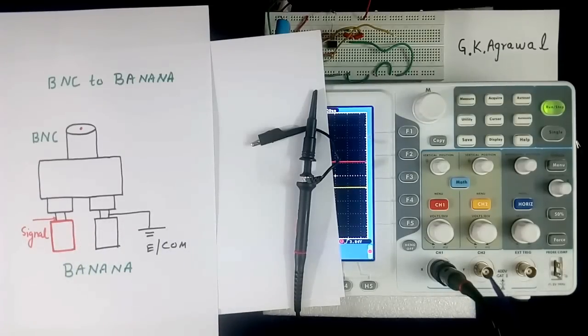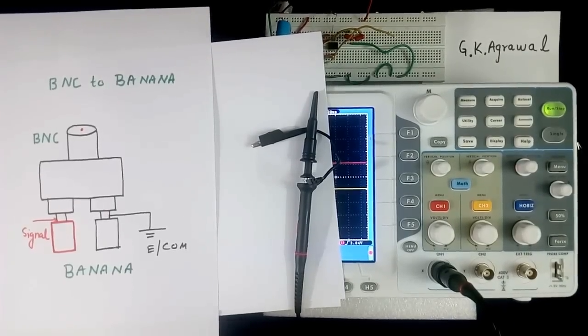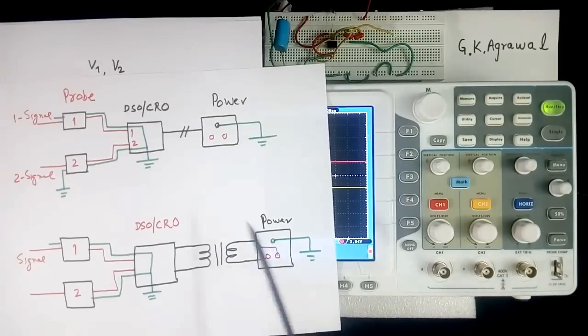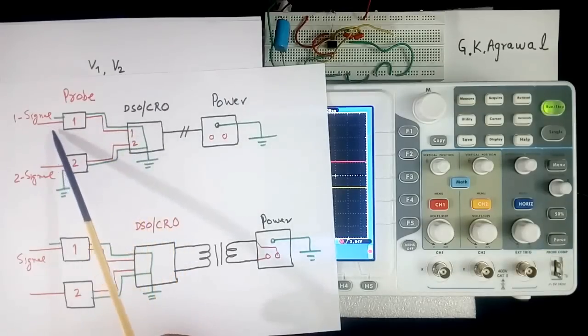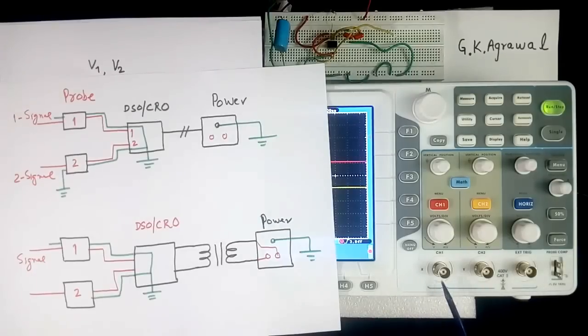If you have 2 probes, another probe can be connected here. Earlier I have told, in CRO or DSO, this is DSO. There will be 2 channels. But in some CRO, there will be only 1 channel. In this scope, there are 2 channels. Channel 1 and Channel 2.